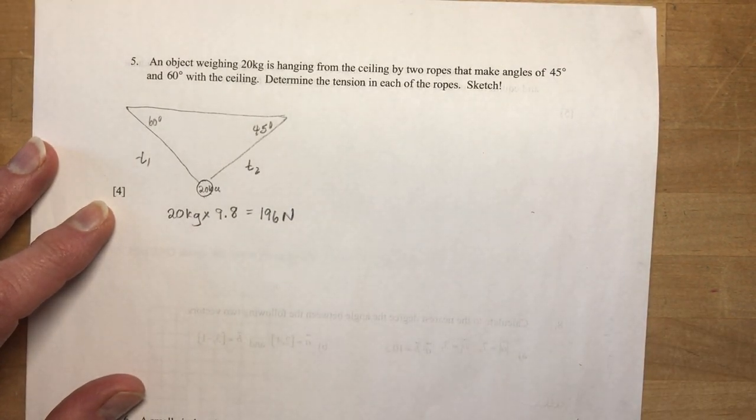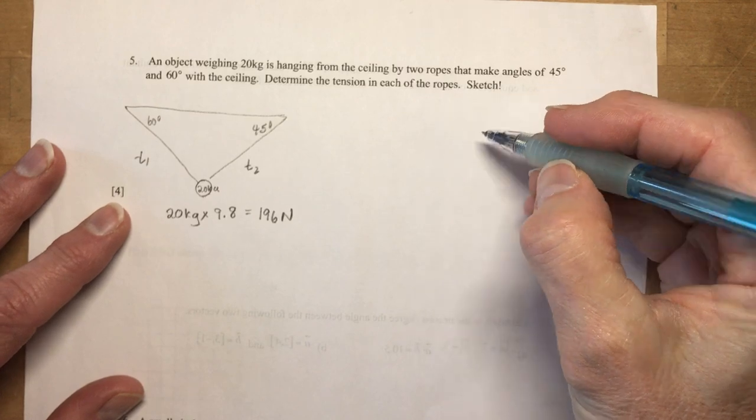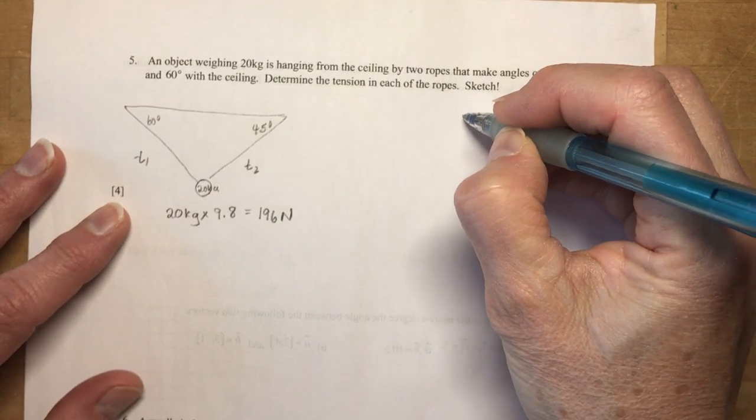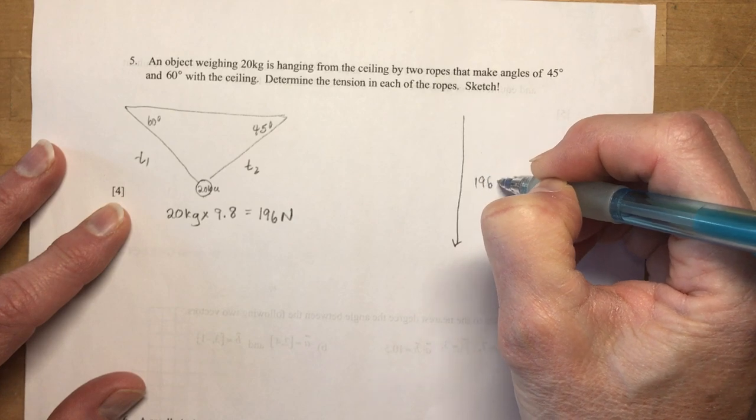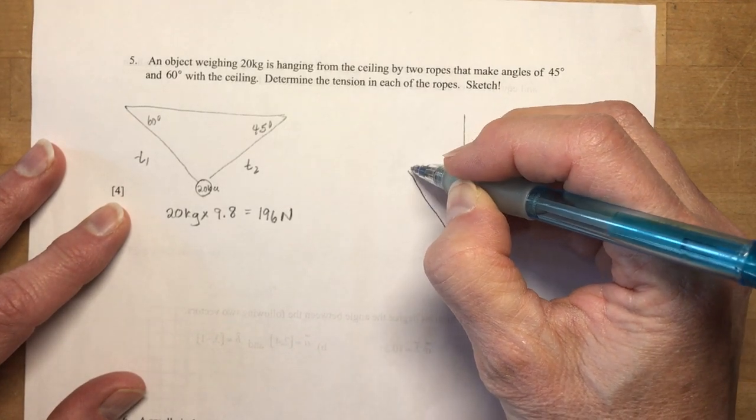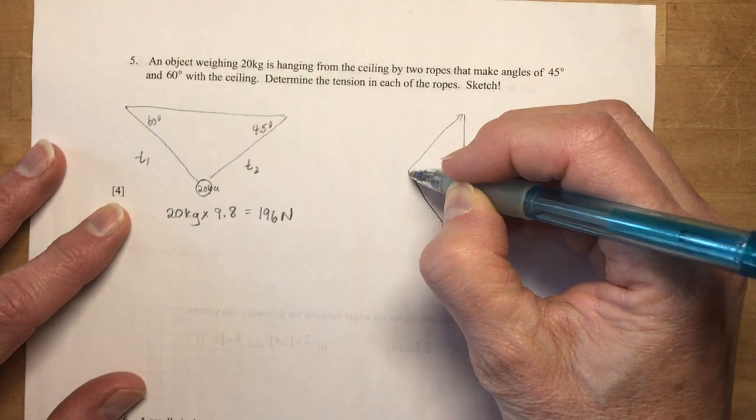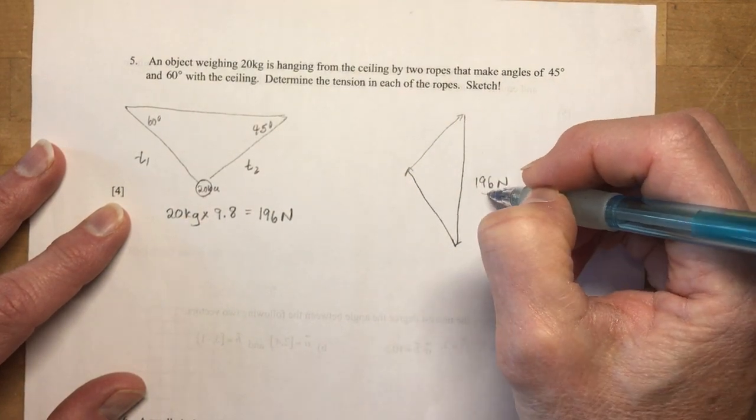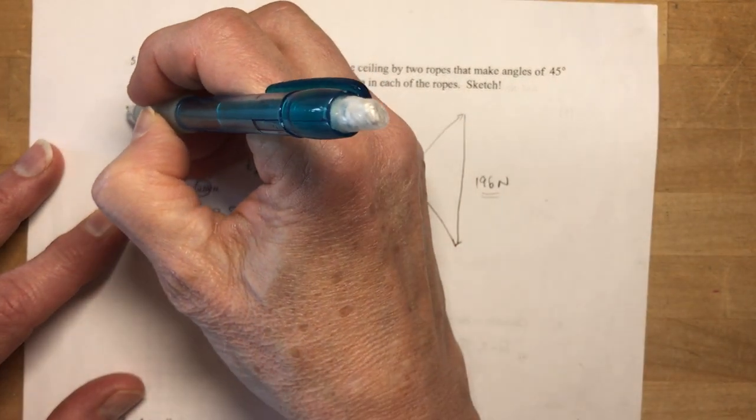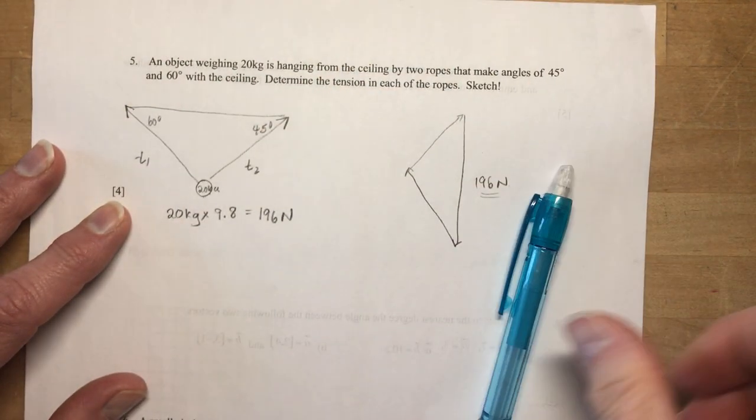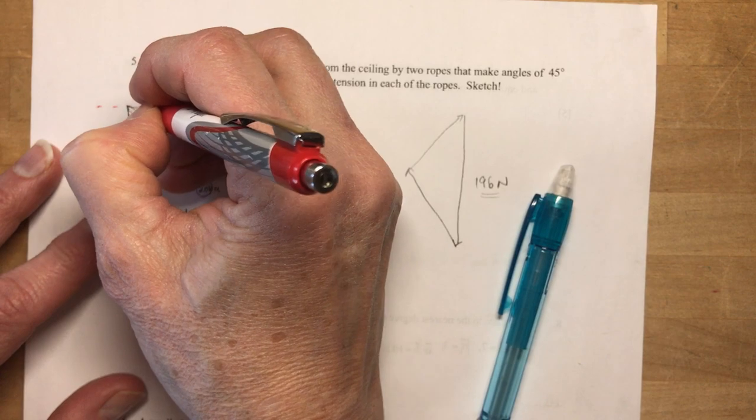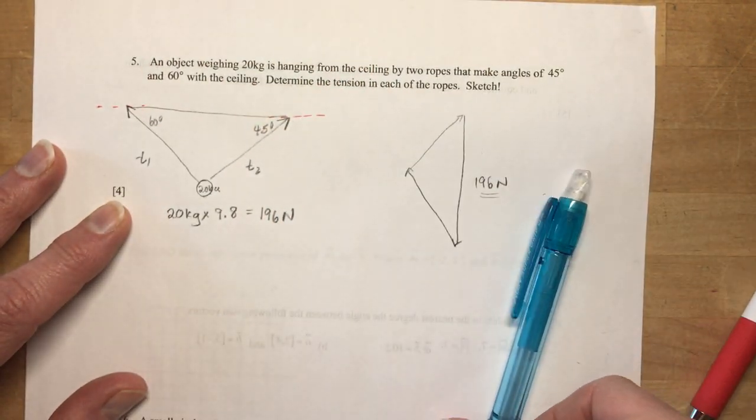Now remember that the first thing you need to do is convert the 20 kilograms to newtons. So I need 20 kilograms times 9.8 and that's going to give me 196 newtons. Okay. Now if you remember how to draw these the first thing you want to do is draw a force diagram.